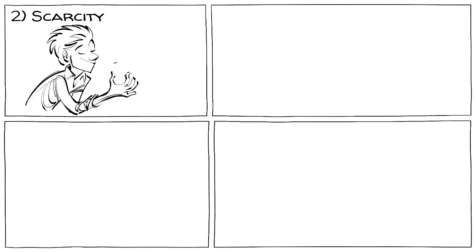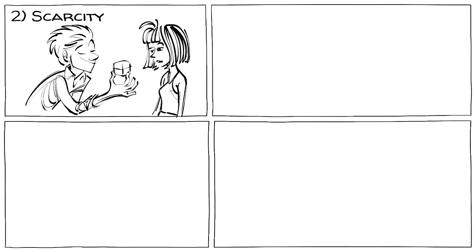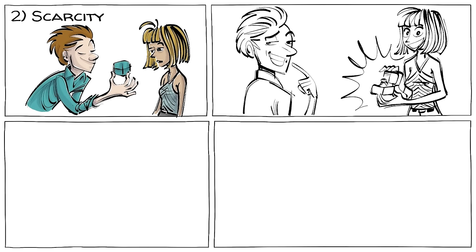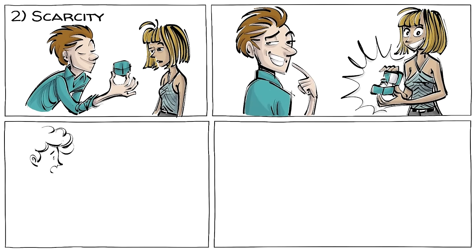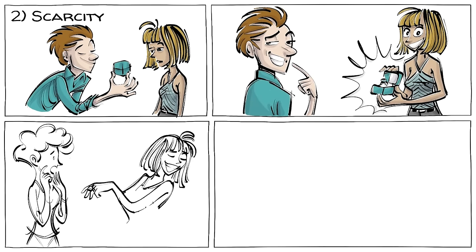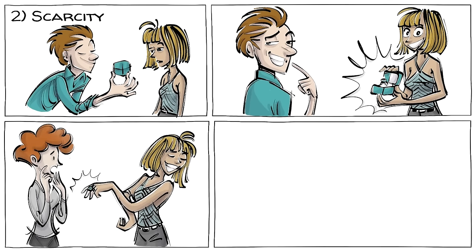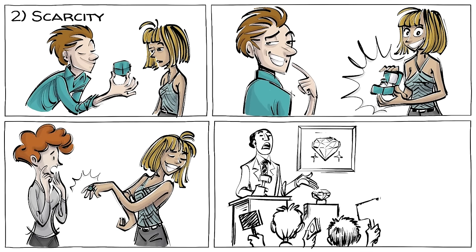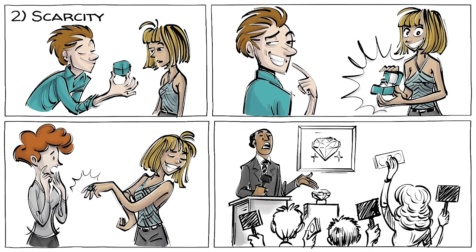The second is scarcity. When people perceive something as rare or limited, they are more susceptible to persuasion. This is driven by our desire to possess what others value and the fear of missing out, which prompts us to make decisions.